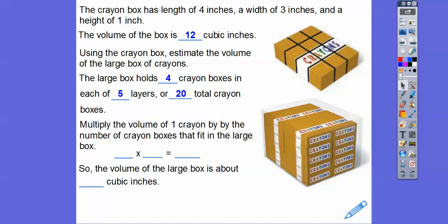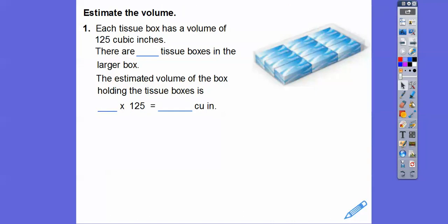Now we're going to multiply the volume of one box, which is 12 cubic inches, times how many boxes are in here. There's 20 total boxes. So we multiply 12 times 20. 12 times 2 is 24, so 12 times 20 is 240. So the volume of the big box is about 240 cubic inches, and it's probably a little bit more because it's going to hold all those crayons.